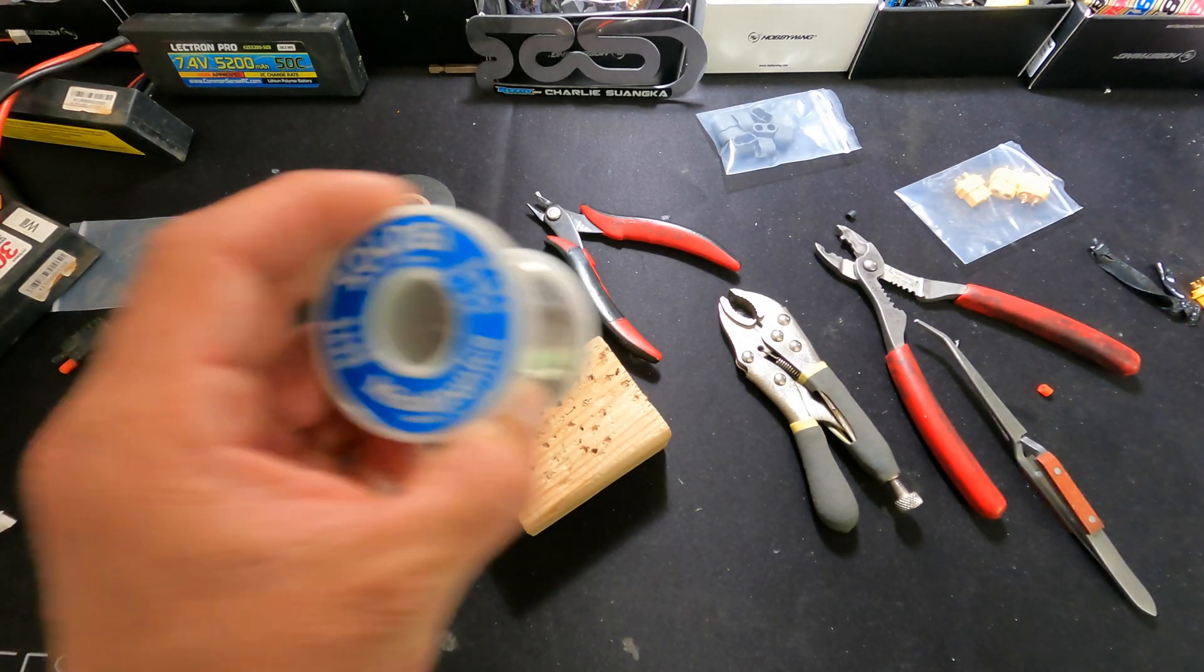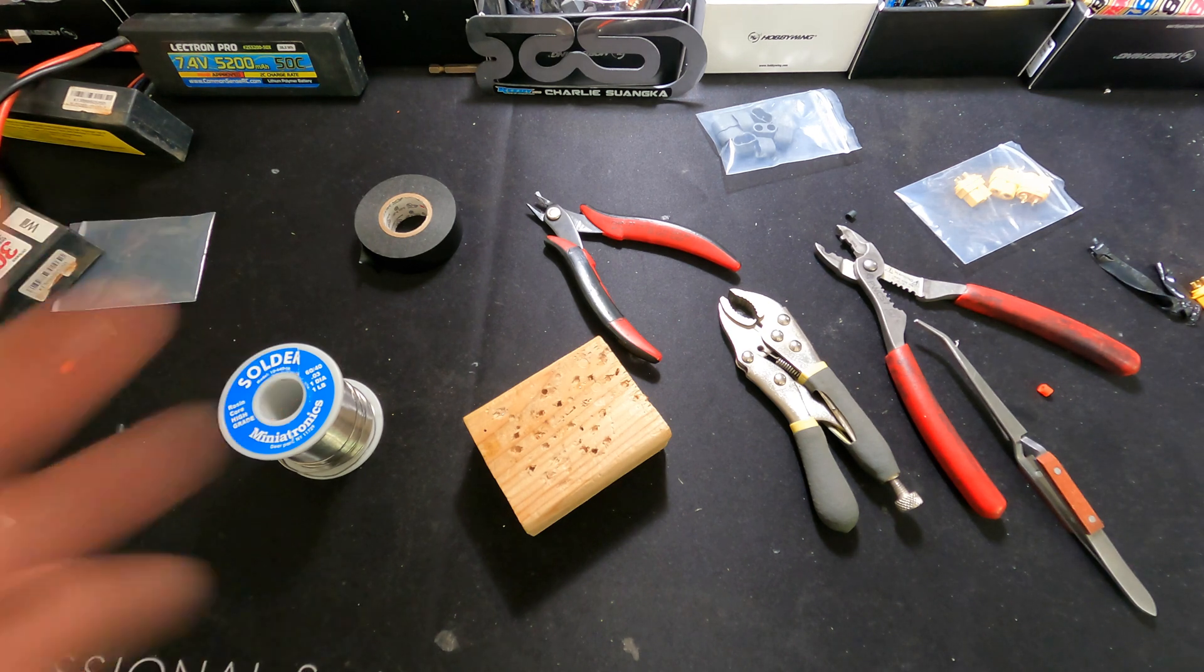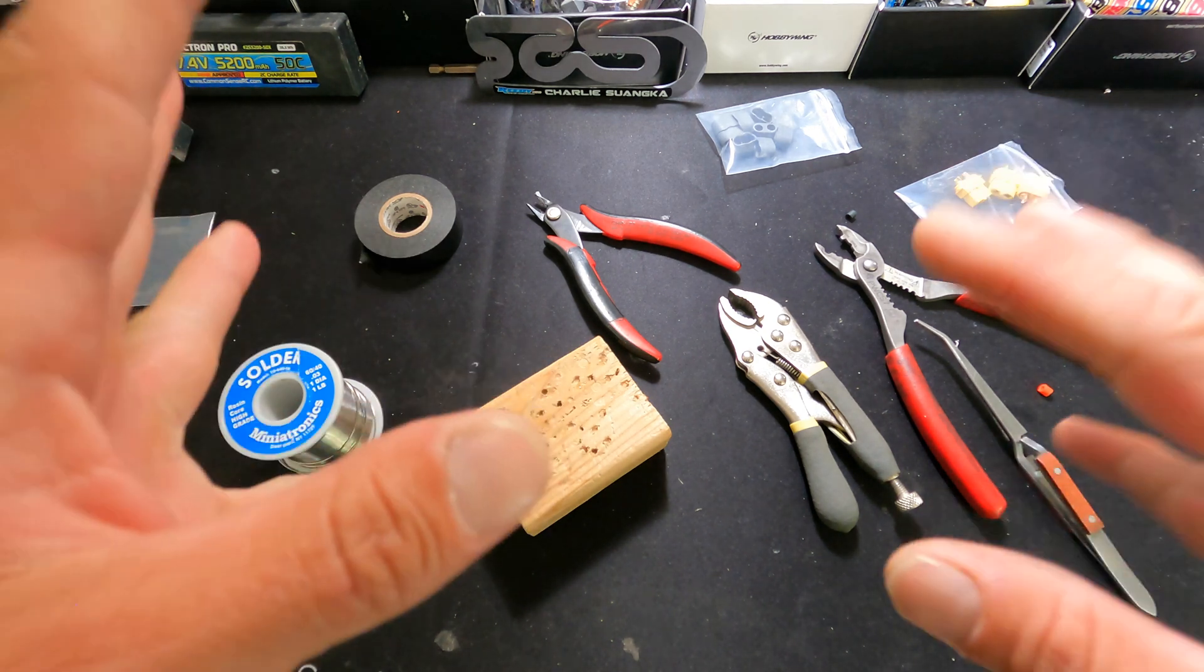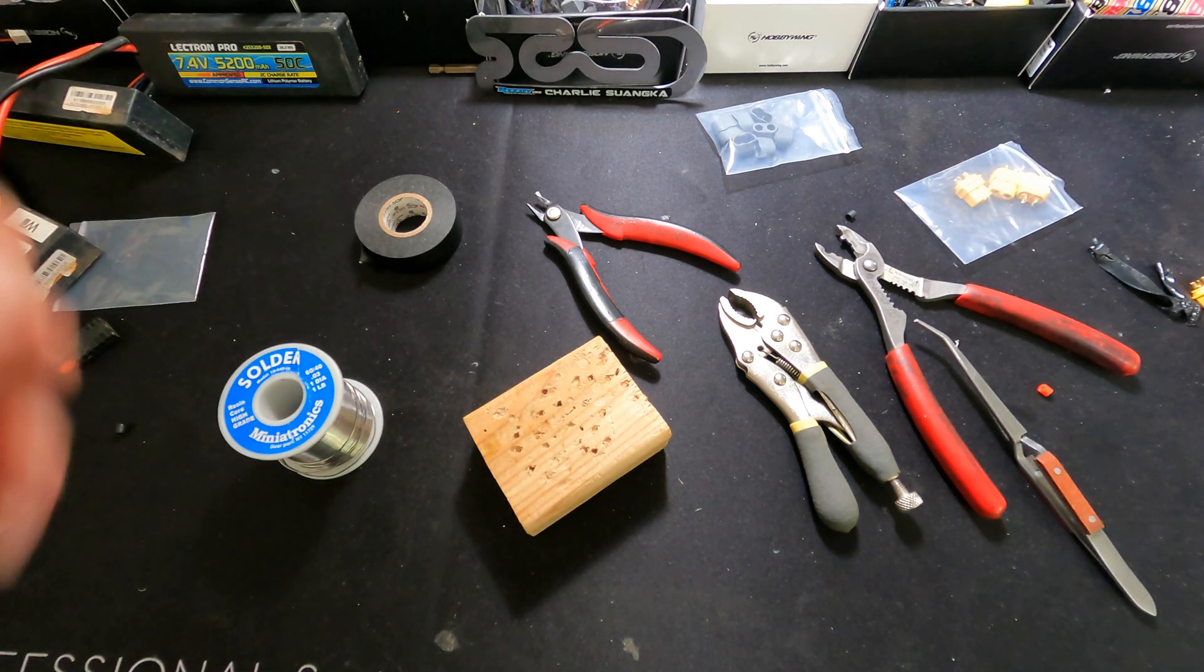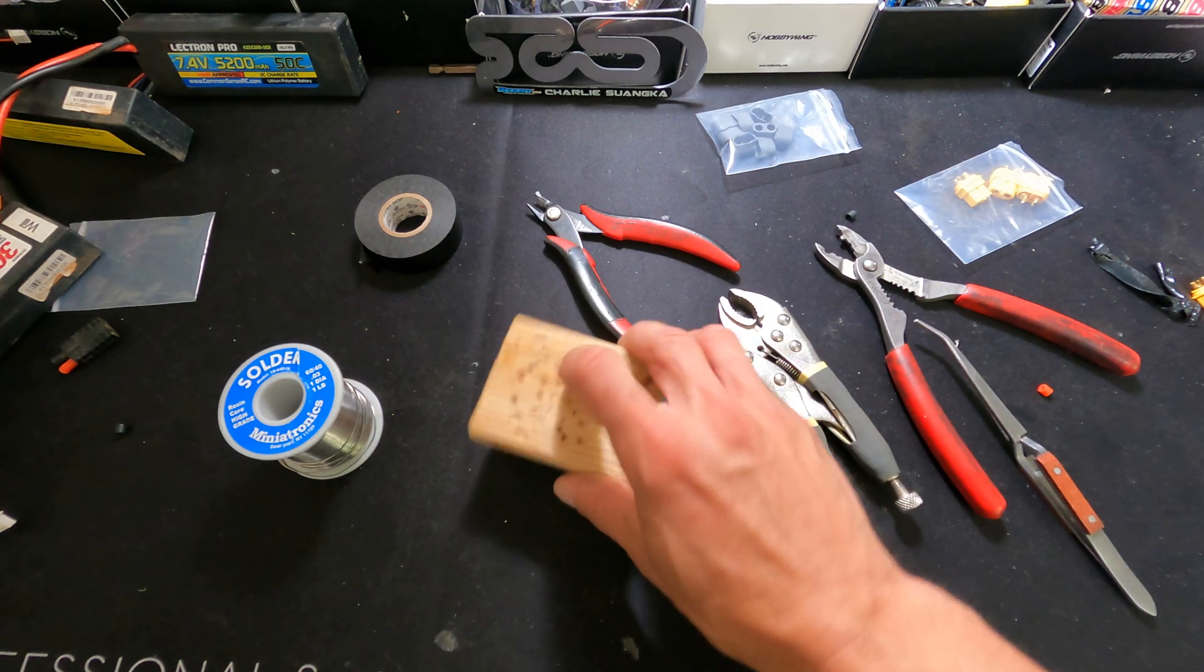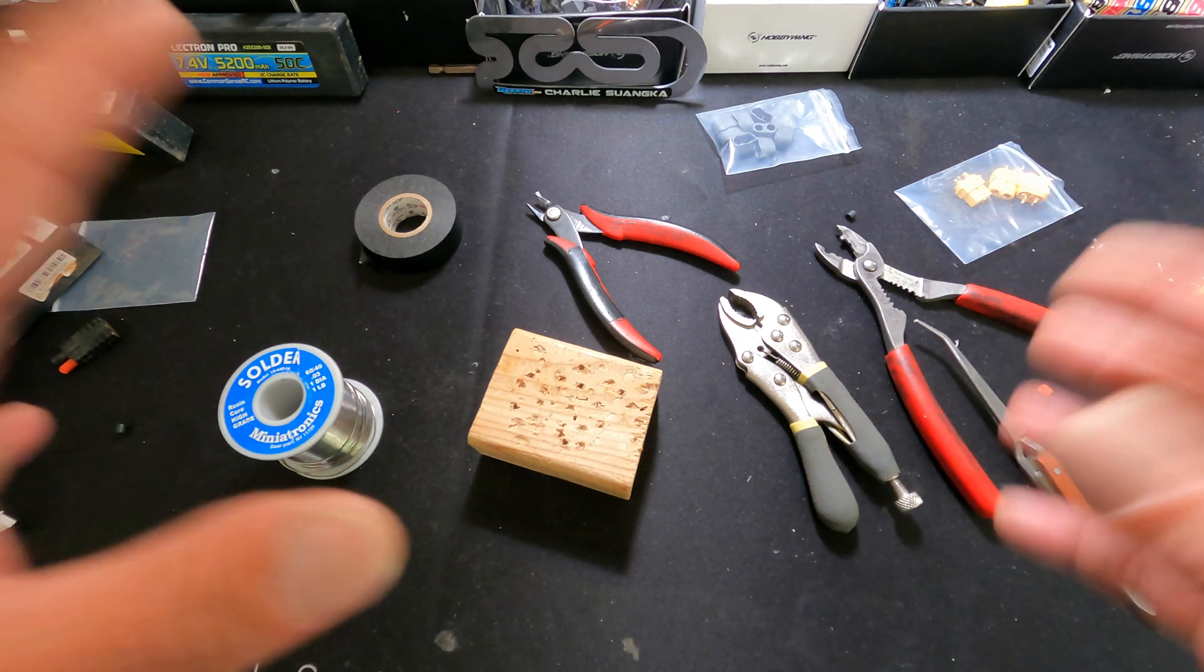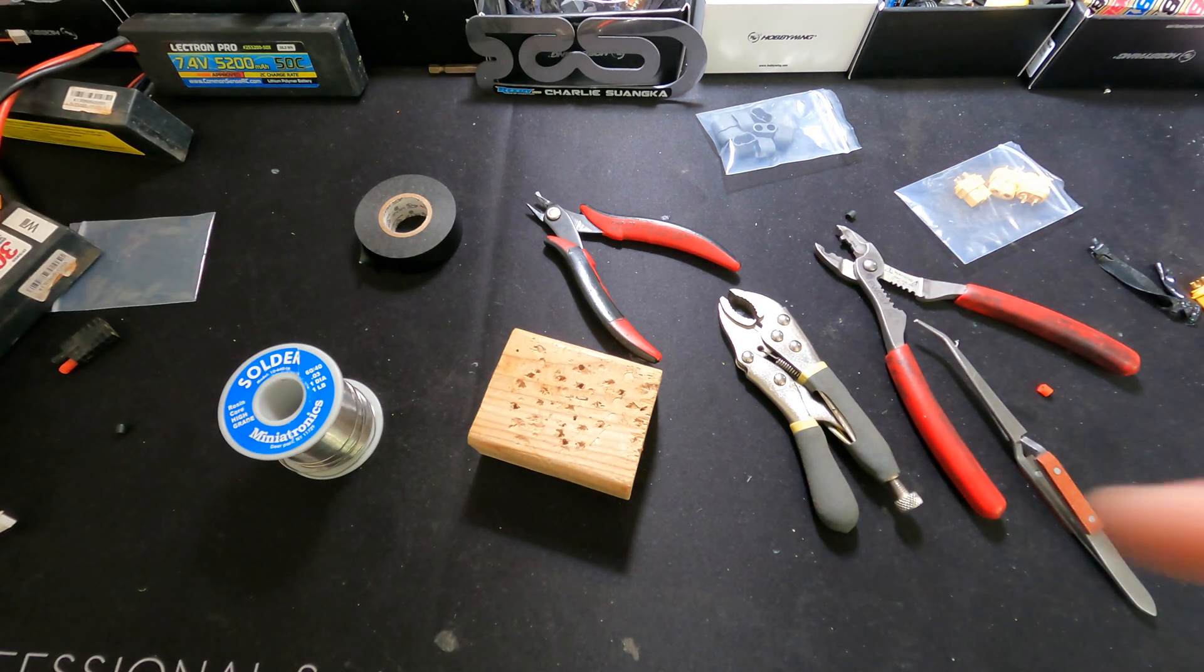If you are working with solder, this is noxious stuff. The fumes that come off there are bad. You want to work in a very well ventilated area. You want to wear eye protection. Solder splashes and does all sorts of bad things. And you want to work on a piece of wood usually so you don't melt your sweet pit mat. Always a well ventilated area and wear your eye protection.